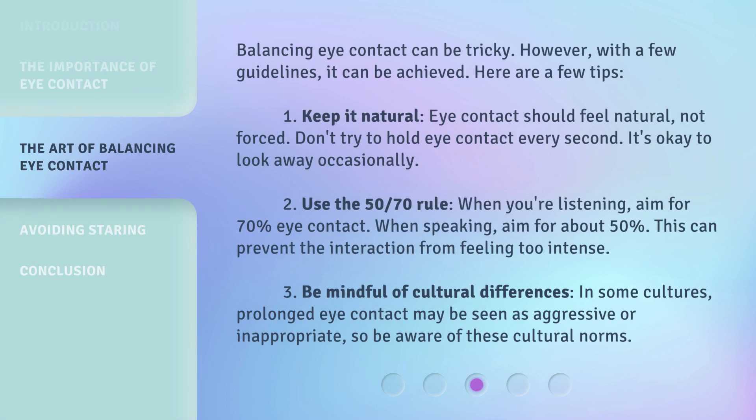Balancing eye contact can be tricky. However, with a few guidelines, it can be achieved. Here are a few tips. First, keep it natural. Eye contact should feel natural, not forced. Don't try to hold eye contact every second — it's okay to look away occasionally. Second, use the 50-70 rule. When you're listening, aim for 70% eye contact. When speaking, aim for about 50%. This can prevent the interaction from feeling too intense. Third, be mindful of cultural differences. In some cultures, prolonged eye contact may be seen as aggressive or inappropriate, so be aware of these cultural norms.